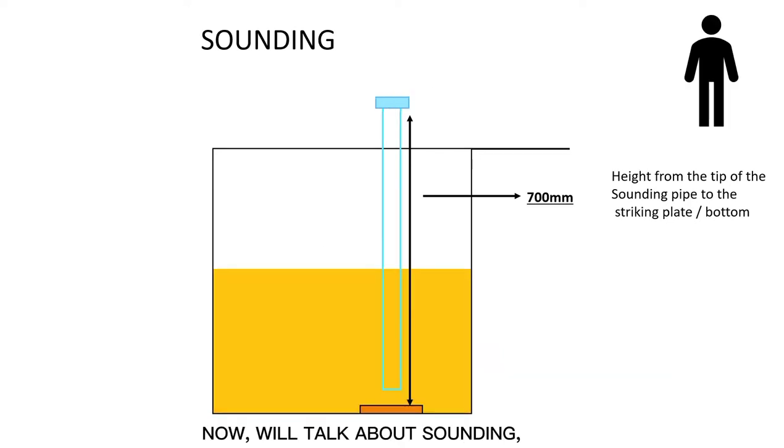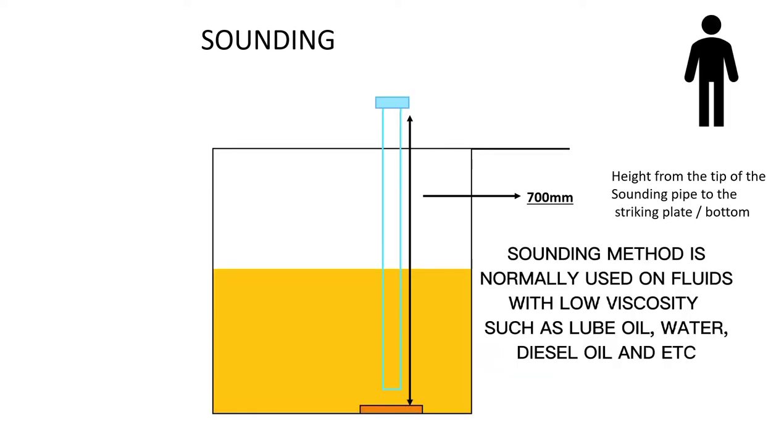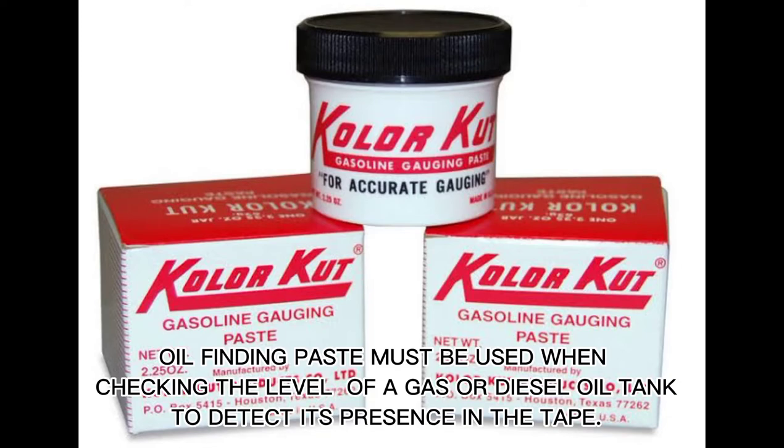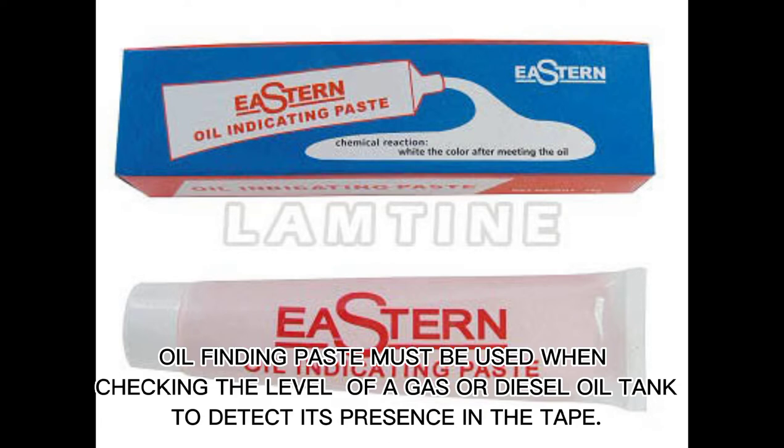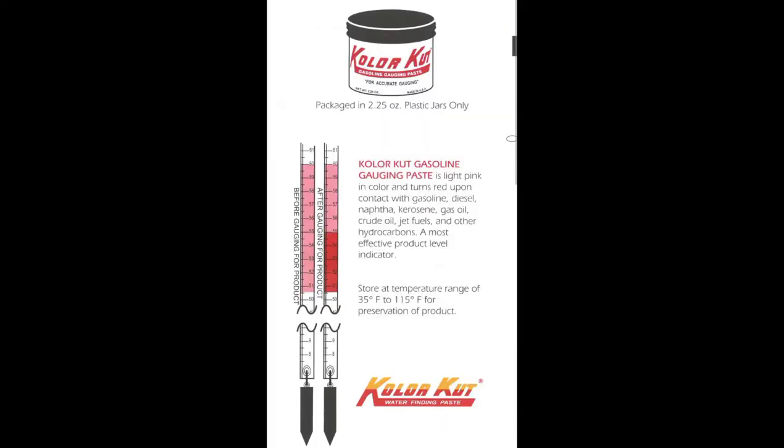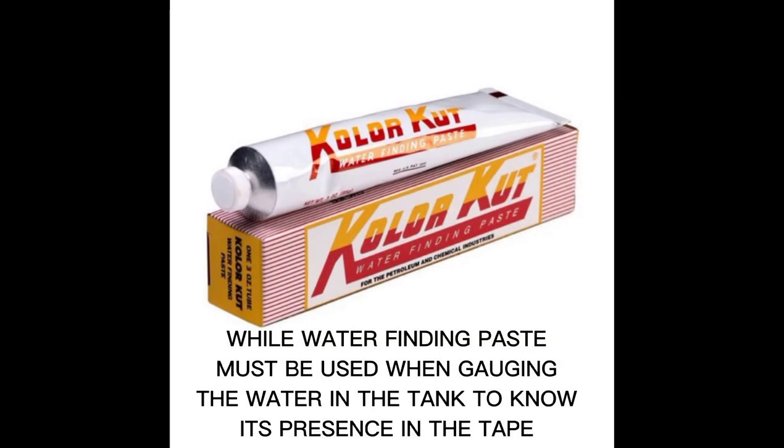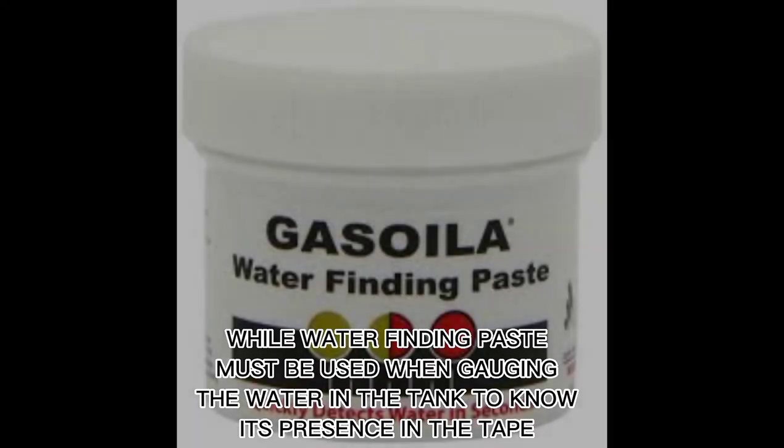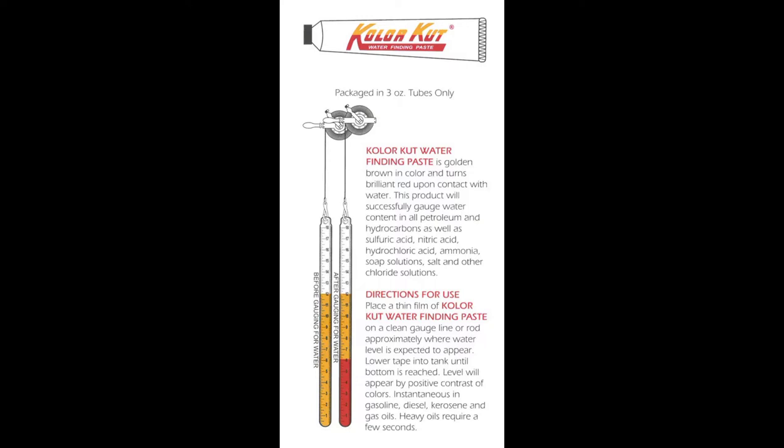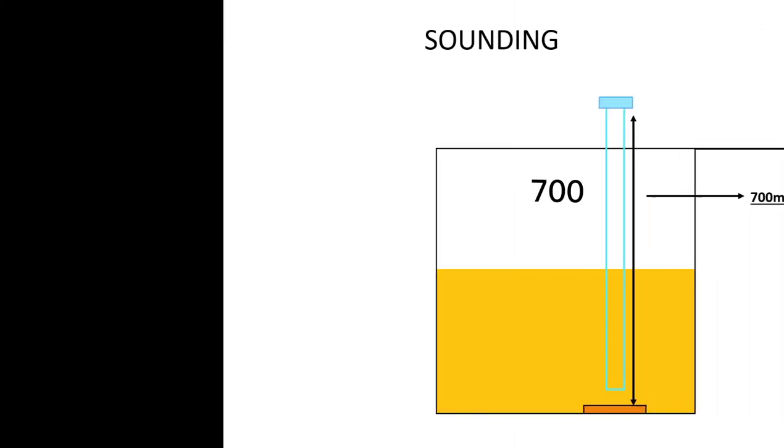Now, we'll talk about sounding. Sounding method is normally used on fluids with low viscosity, such as lube oil, water, diesel oil, and etc. Oil finding paste must be used when checking the level of a gas or diesel oil tank to detect its presence in the tape. While water finding paste must be used when gauging the water in the tank to know its presence in the tape.